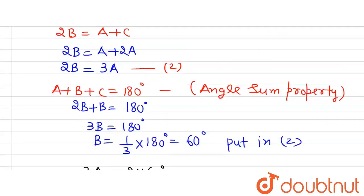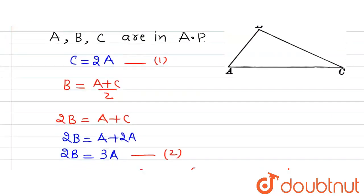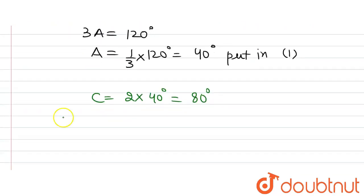Now we have A, B, and C all of them. So all the angles, we can write them as A is equal to 40 degrees, B is equal to 60 degrees, and C is equal to 80 degrees. And it can be observed that A, B, and C are in AP because the common difference is 60 minus 40, 20 degrees. That's all. Thank you.